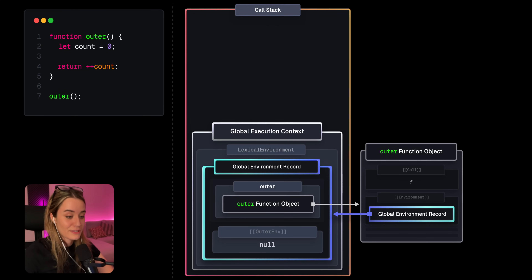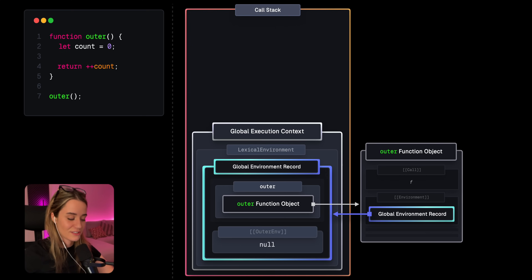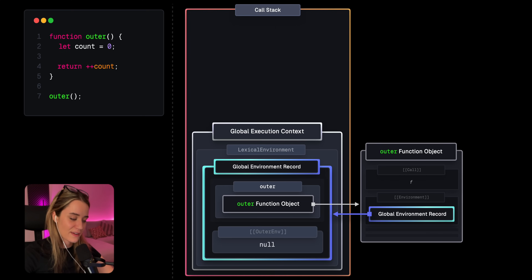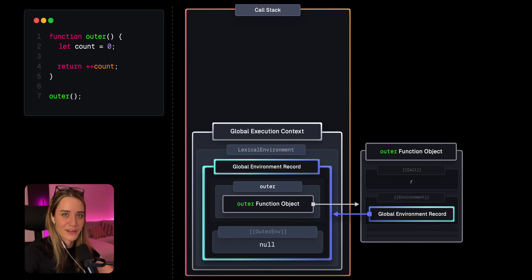It's also destroyed. This means that we lose access to the variables, functions, and everything within that environment record. But that makes sense, because if outer has finished executing, we no longer have to use the count variable anywhere outside of outer. So it would just be a waste of memory to keep this around.